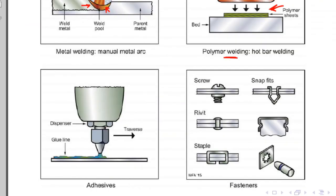Adhesives are used to join two surfaces — a film of adhesive is applied to one surface which is then pressed onto a mating surface. Fastening joins two components using a screw, rivet, staple, or snap fits. Push-through and push-on snap fasteners are also used.